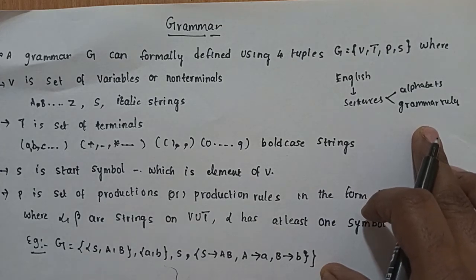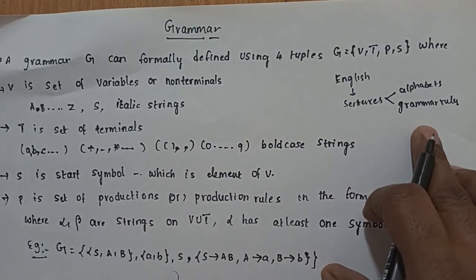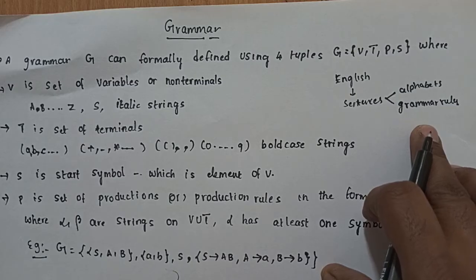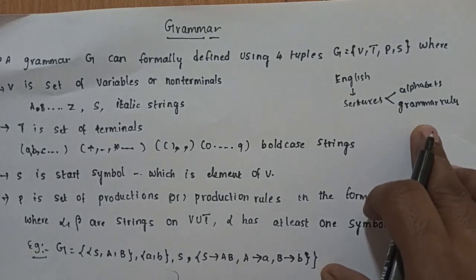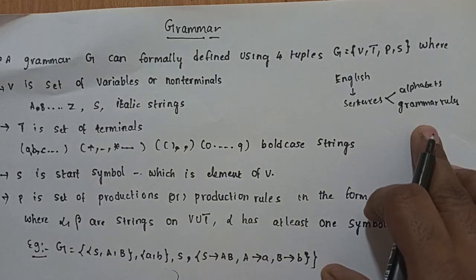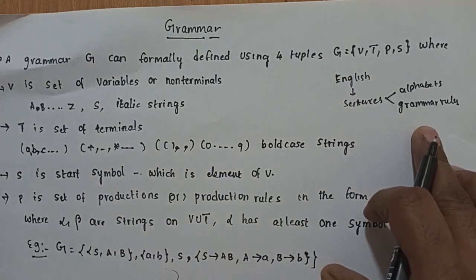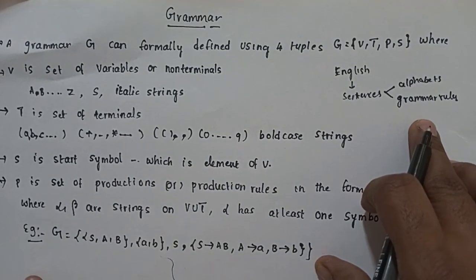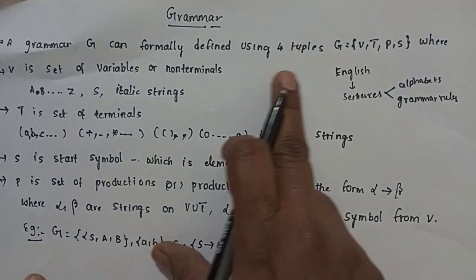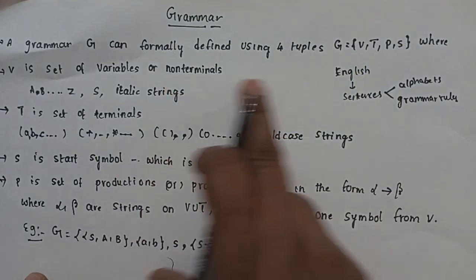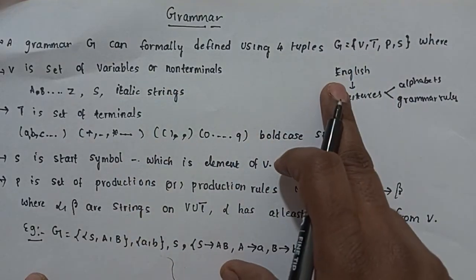Similarly, grammar rules apply to computer languages. So grammar G can formally be defined using 4-tuples.